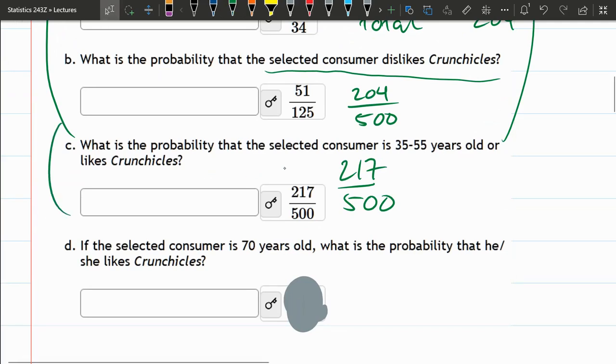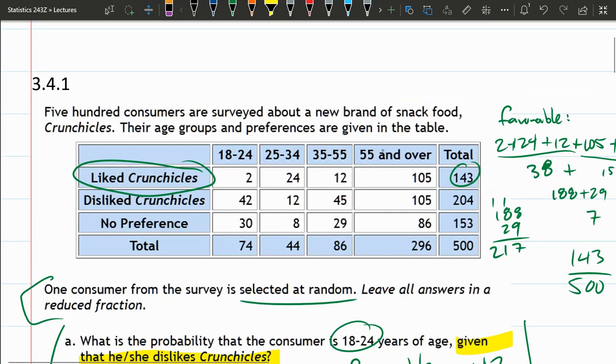Part D. Independent from the other parts. If a consumer is 70, so they are 70, that's not asking a probability there. They're given that they're 70 years old. What's the probability that he or she likes these Crunchies? So the consumer is 70. So we're in the 55 and over. So we're only considering these numbers. What's the probability they like Crunchies? So it's 105 is favorable and now total 296. So this will be 105 divided by 296.